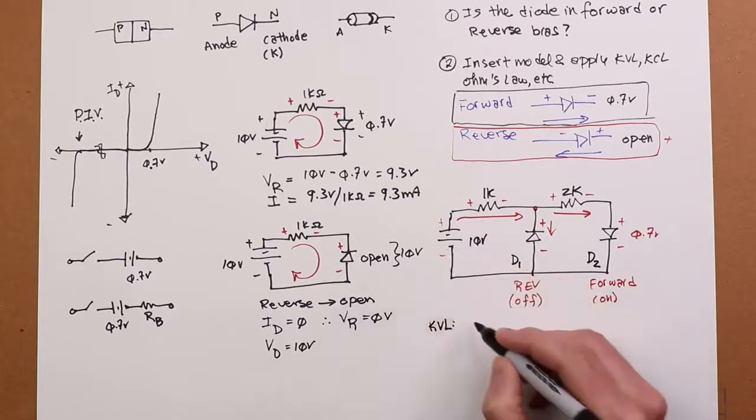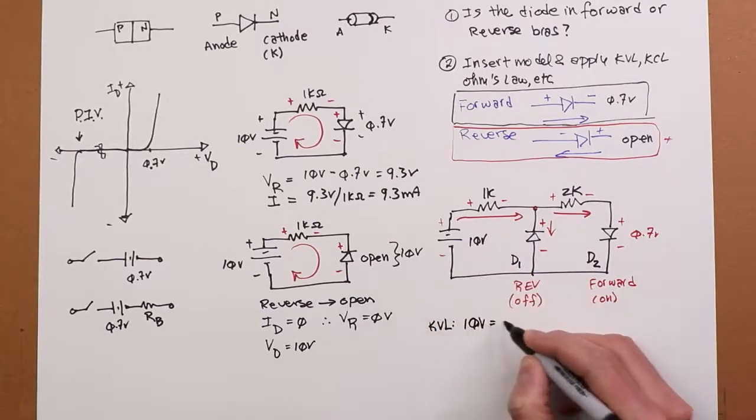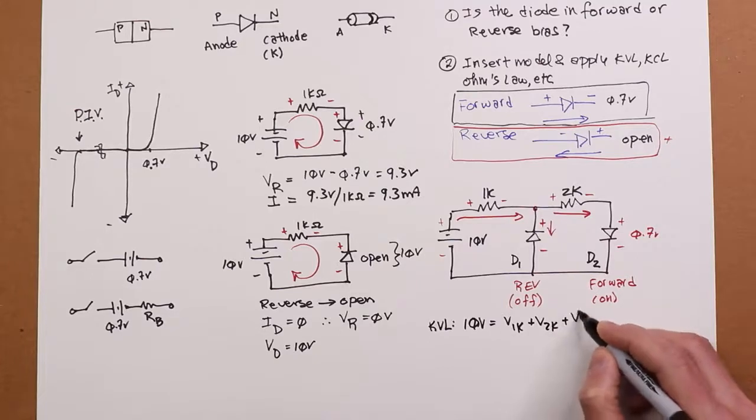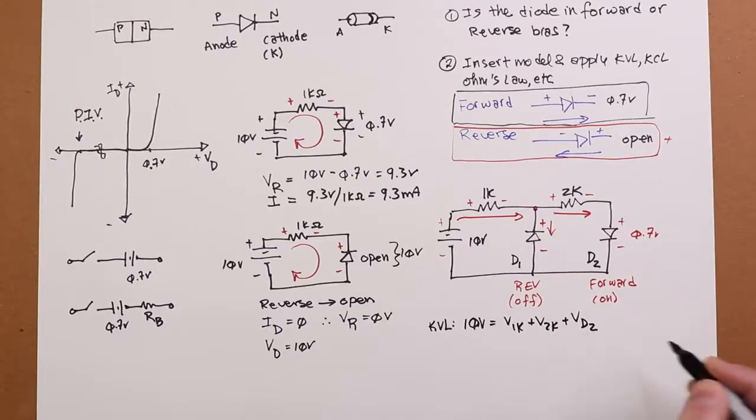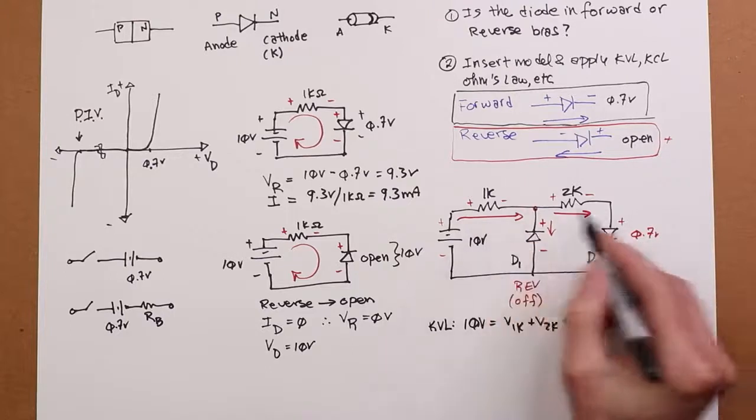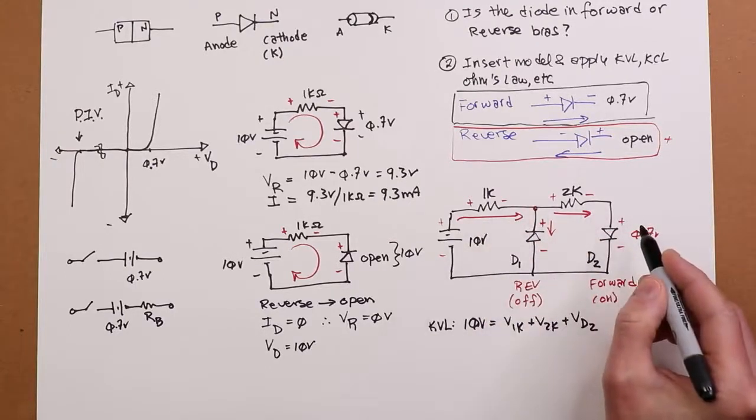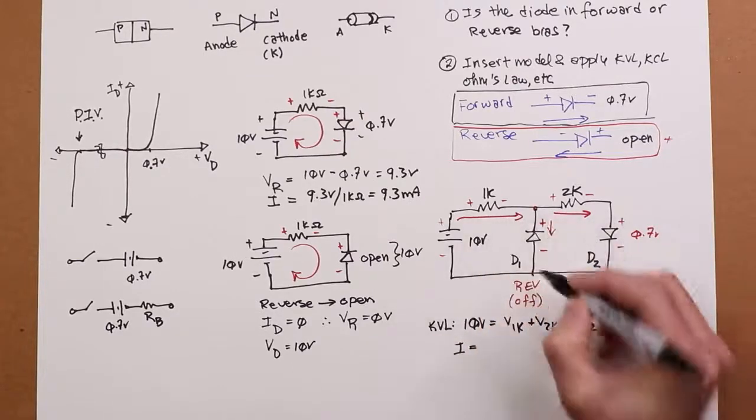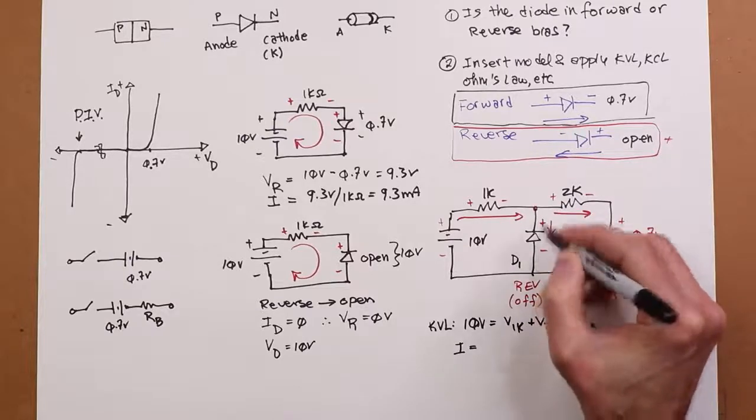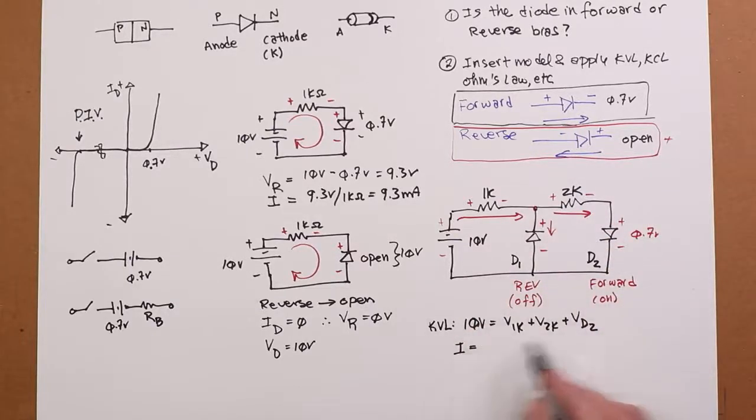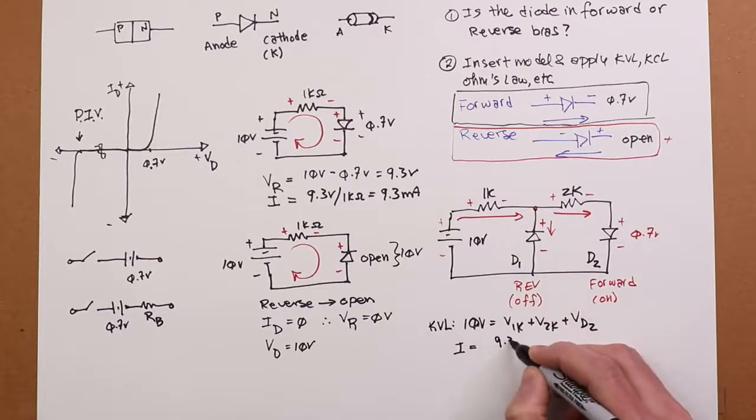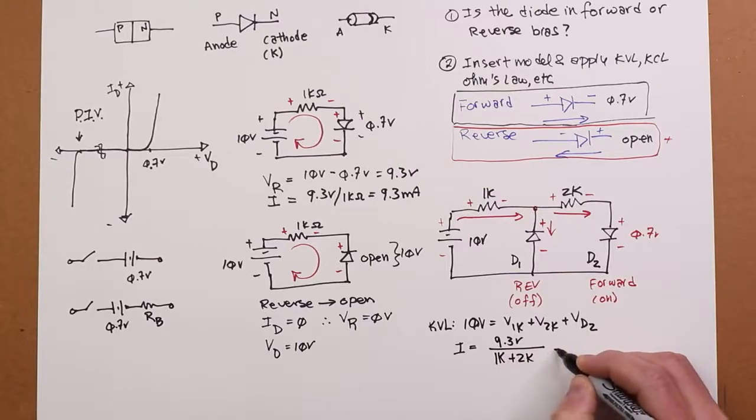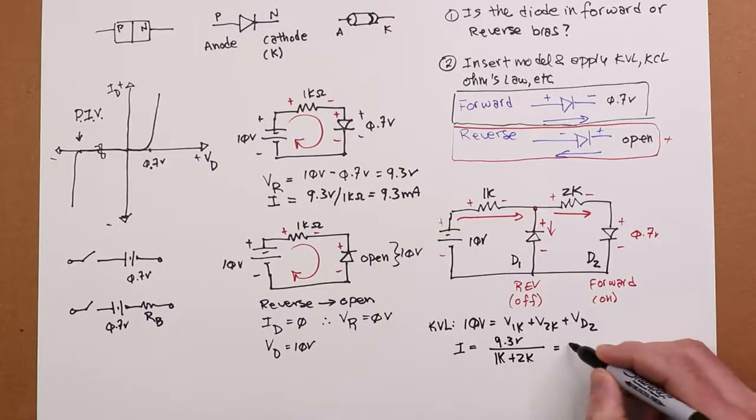So what does KVL give you? KVL would say, well, I've got 10 volts. That's got to equal the drop on the 1k, plus the drop on the 2k, plus the drop on D2, which we know is 0.7 volts. So 9.3 volts must drop across the 1k and the 2k. Therefore, the current, this current, which is going to be the same as this current, because again, this is an open, we can assume the current through D1 is 0. That's going to be 10 minus the 0.7, 9.3 volts, over 1k plus 2k, 3k. All right, so when you divide that out, you're going to get 3.1 mils.